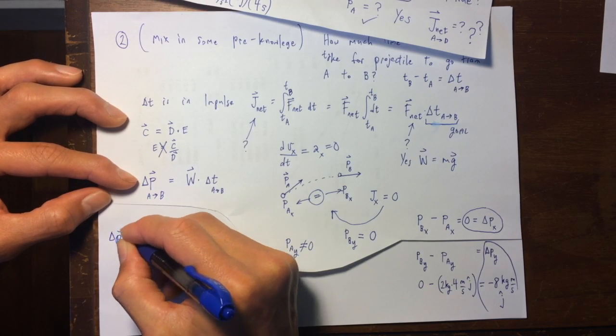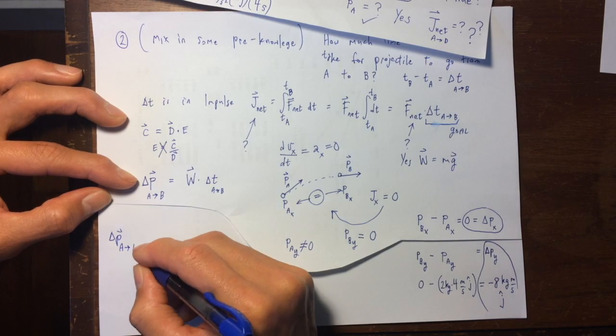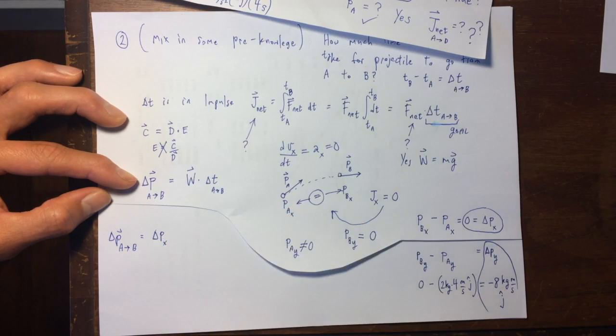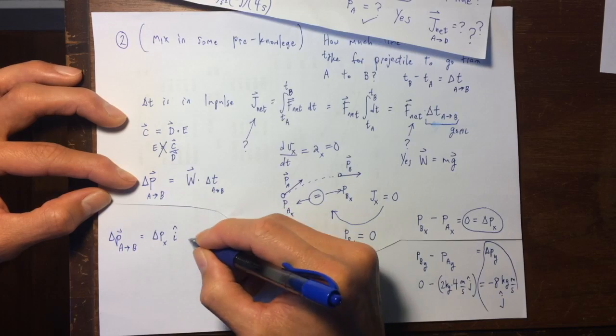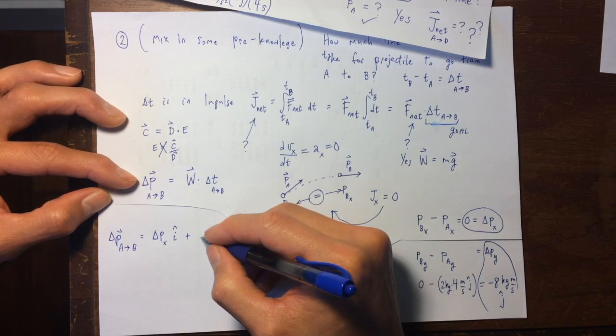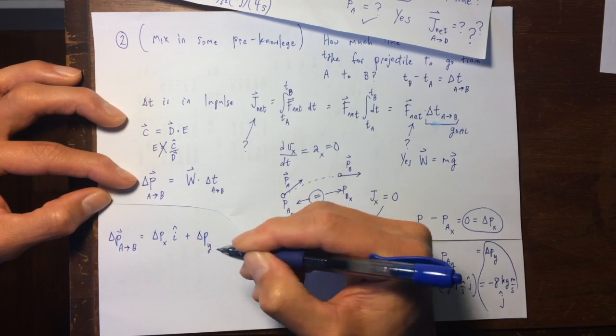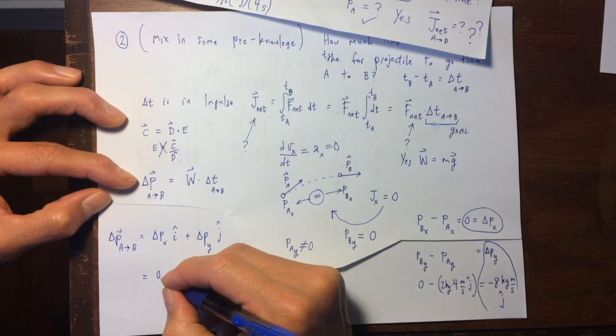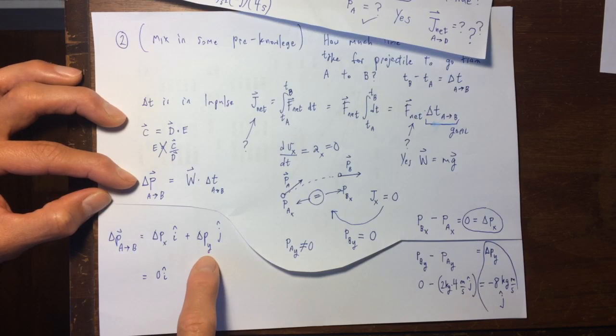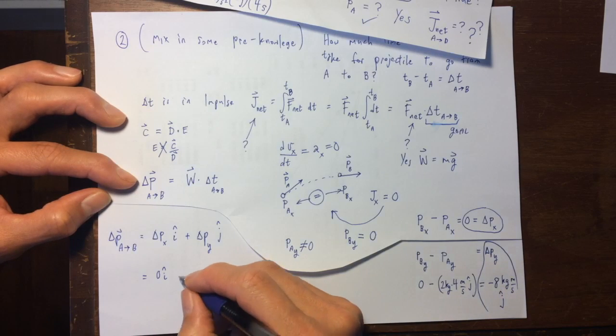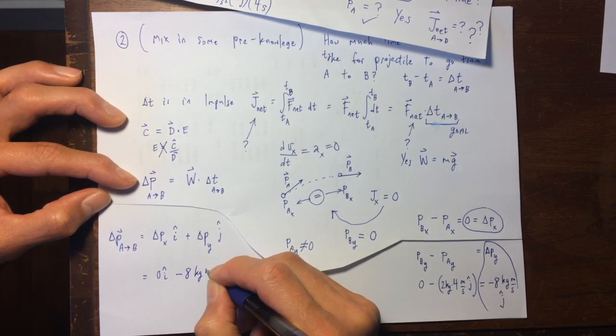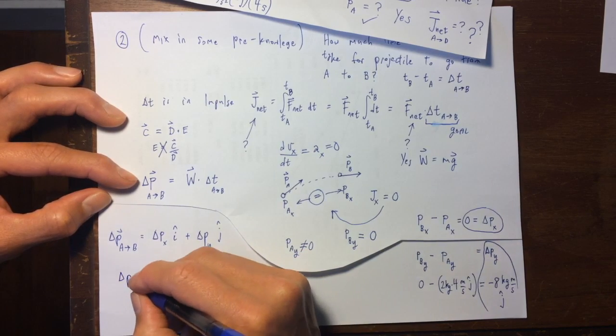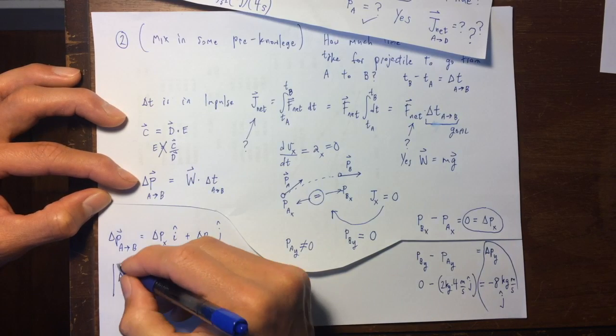And so delta p sub y is equal to negative eight kilograms meters per second, and it's in the j hat. Apologies for going into the corner, but so this is a useful piece of information, this is a useful piece of information, because now we can go and write down the left hand side here.